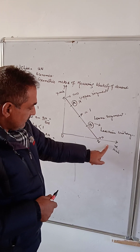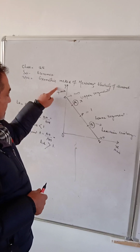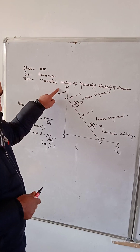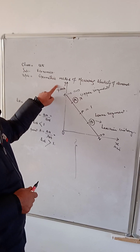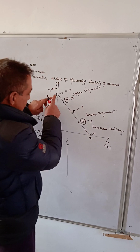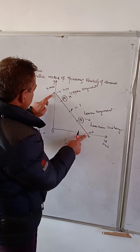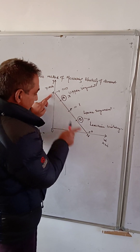In the figure, this is the x-axis and this way is the y-axis. This is the straight line M-N.